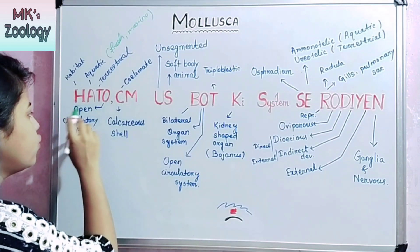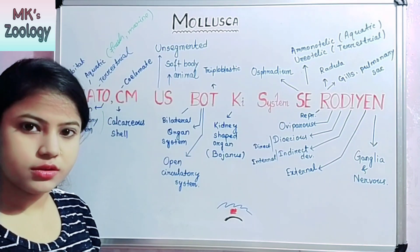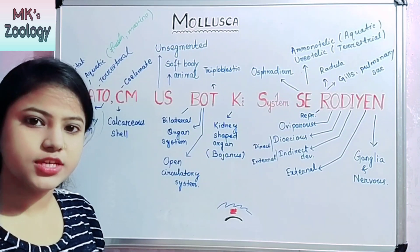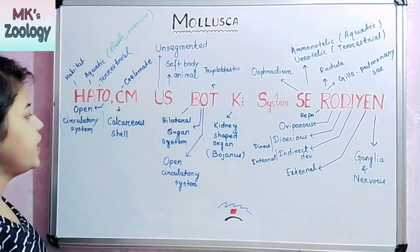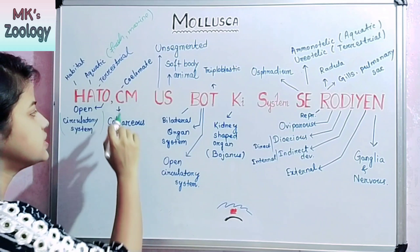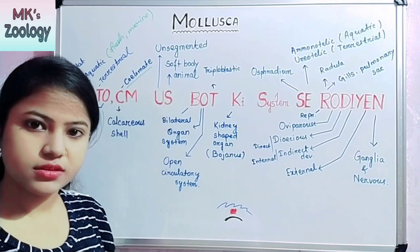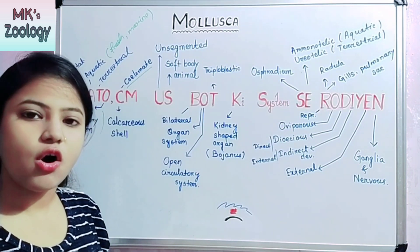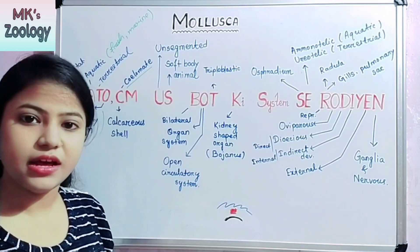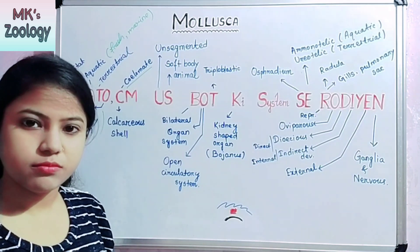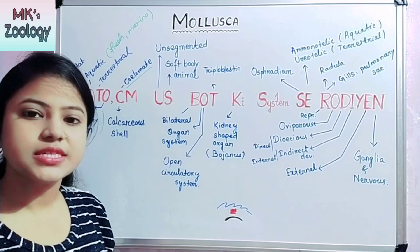Then O means open circulatory system. Before Phylum Mollusca, Arthropoda also have an open circulatory system, but Annelids have a closed circulatory system. Next is C, which stands for coelomate — Mollusca are coelomate. Before Platyhelminthes all animals are acoelomate, and Aschelminthes is the single phylum which is pseudocoelomate, meaning a false coelom is present. After Aschelminthes, all animals are coelomate.